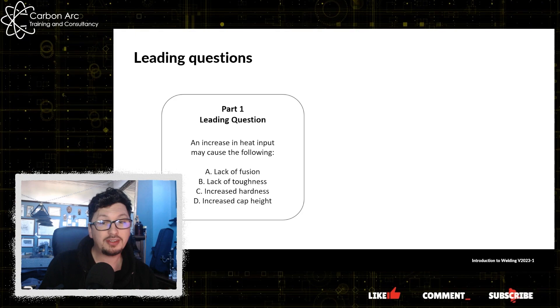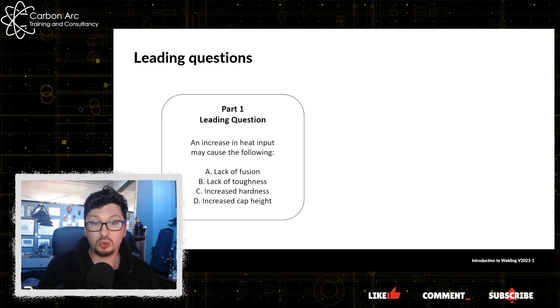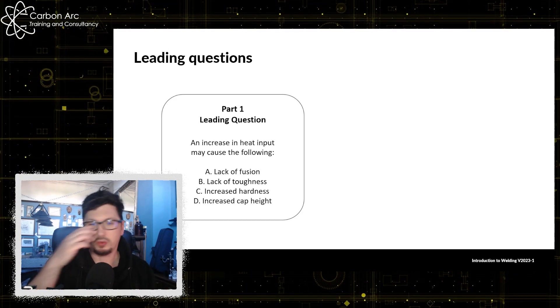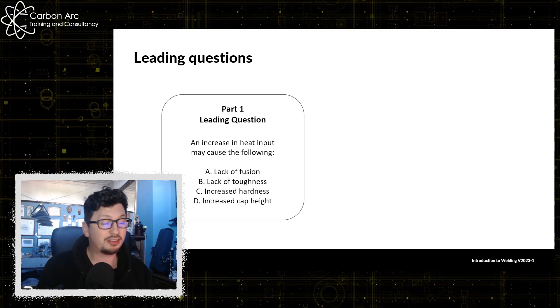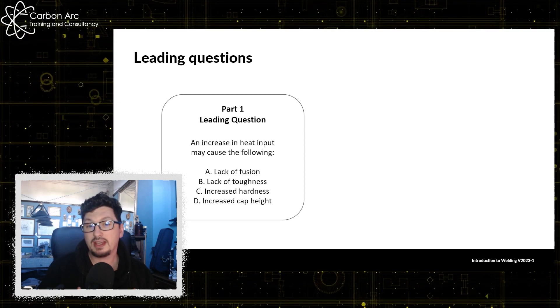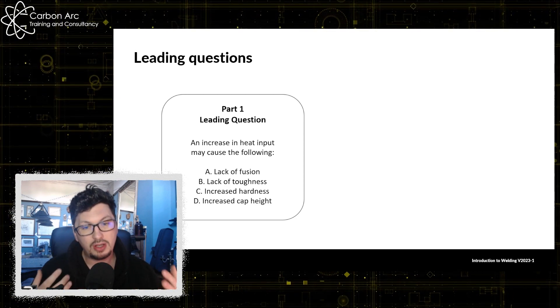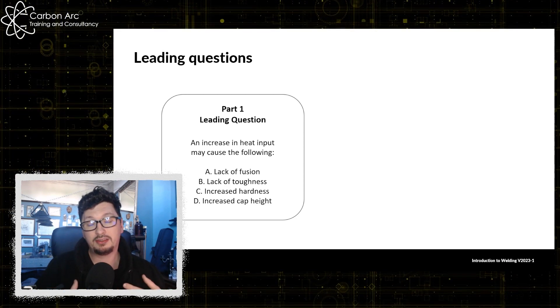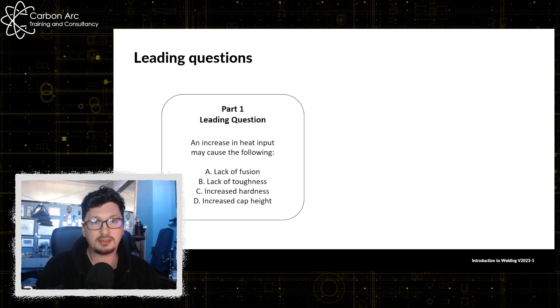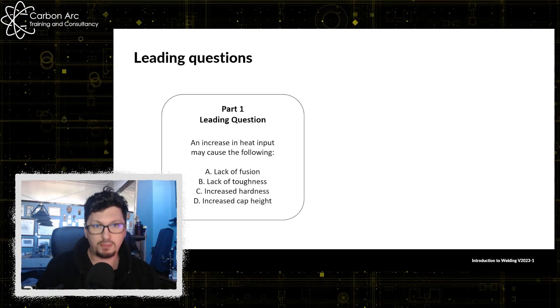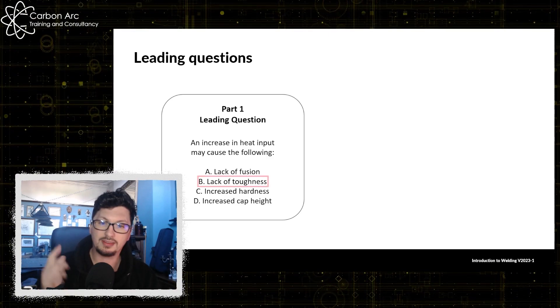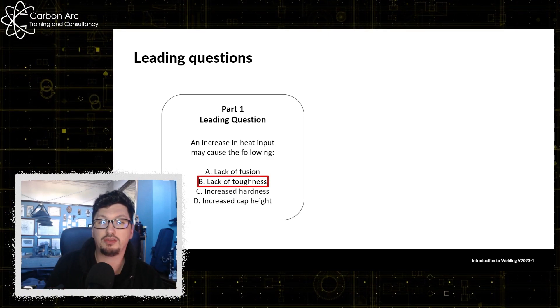Here we've got an increase in heat input may cause the following. So answers are lack of fusion, lack of toughness, increased hardness, or increased cap height. With this, an increase in heat input will lead to slower cooling rates which will allow the grain structure to grow larger which will drop our toughness values. So we can say right, lack of toughness for part one.